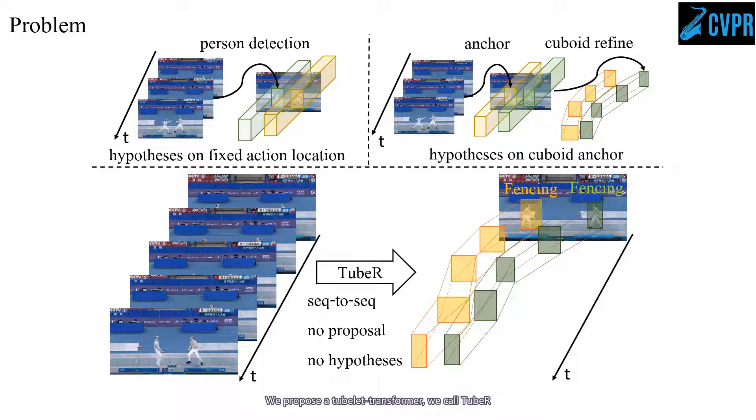We propose a tubelet transformer we call TubeR to model action detection as a sequence-to-sequence translation task. Without any proposal or hypothesis, TubeR localizes and recognizes actions from tubelet-specific representations.